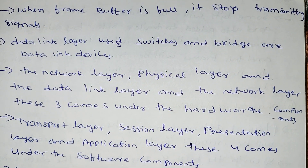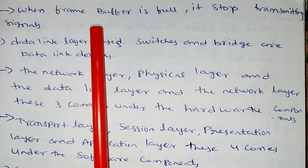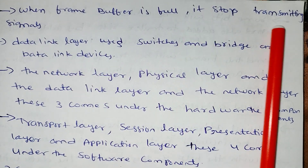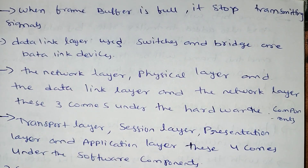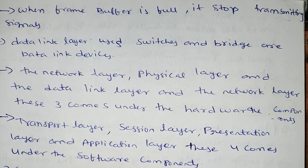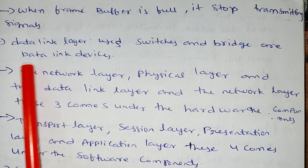When the frame buffer is full, it stops transmitting the signal because the data link layer buffer is full. The data is stored in the buffer until it can be used.